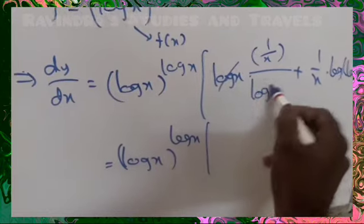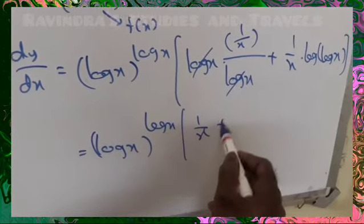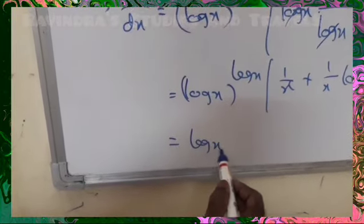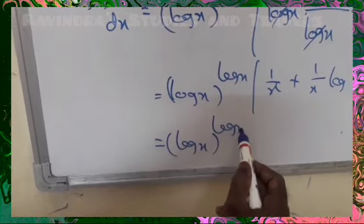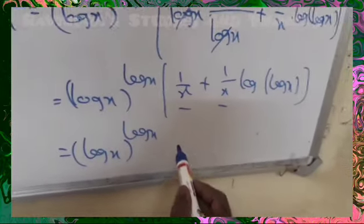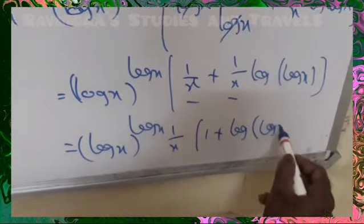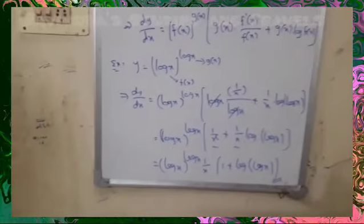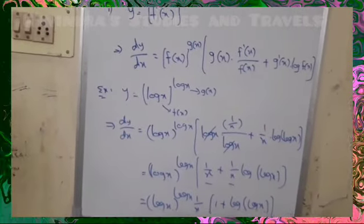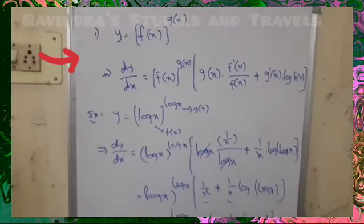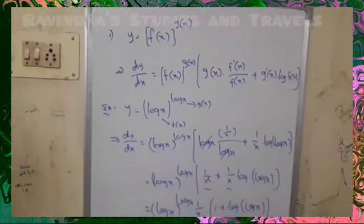Here the log x cancels, giving 1/x + 1/x · log(log x). So finally (log x)^(log x) times (1/x)[1 + log(log x)]. If you observe, see how fast you got the answer - otherwise this would be very lengthy. So remember this shortcut formula which is very much useful in EAMCET and other competitive exams.